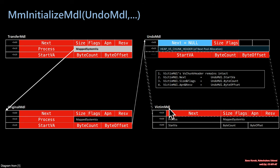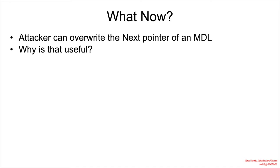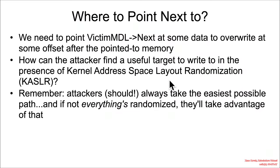The victim MDL should be one of those linked list entries, and that is super useful because next is a pointer — so now we've got an arbitrary pointer that gives us the capability to write what-where. The attacker can overwrite the victim MDL's next pointer. They need to figure out where to point it, given the fact that there is kernel address space layout randomization in effect in the secure kernel memory space.